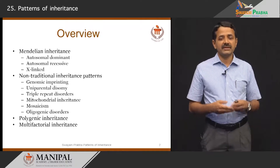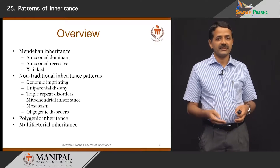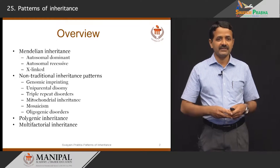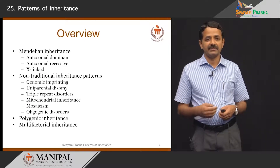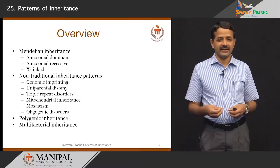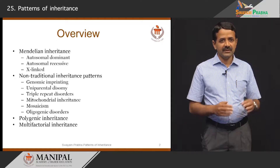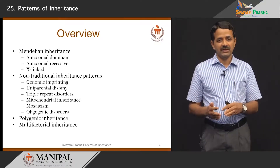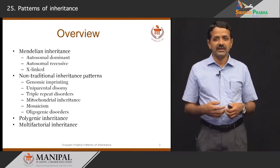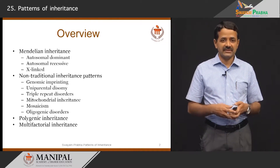Over the next 30 minutes, I will discuss the classical Mendelian inheritance, which includes autosomal dominant, autosomal recessive, and X-linked inheritance, and non-traditional inheritance patterns like genomic imprinting, uniparental disomy, triplet repeat disorders, mitochondrial inheritance, mosaicism, and oligogenic inheritance, and I will briefly touch upon polygenic and multifactorial inheritance. This slide shows the summary of what we know about inheritance of various characters or phenotypes and how genes play a role in the manifestation or inheritance of these traits.